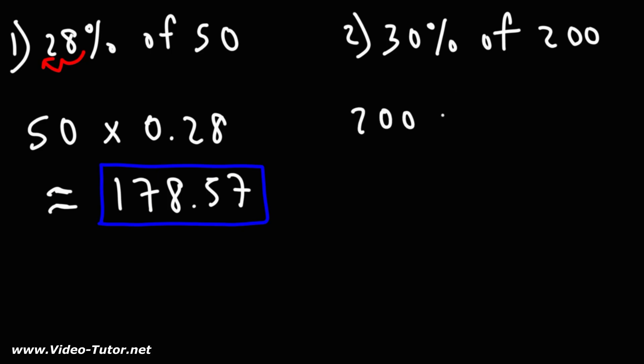So we're going to multiply 200 by 30%. 30% as a decimal is 0.30. You just got to divide 30% by 100% or move the decimal two units to the left. And you'll get 0.30.